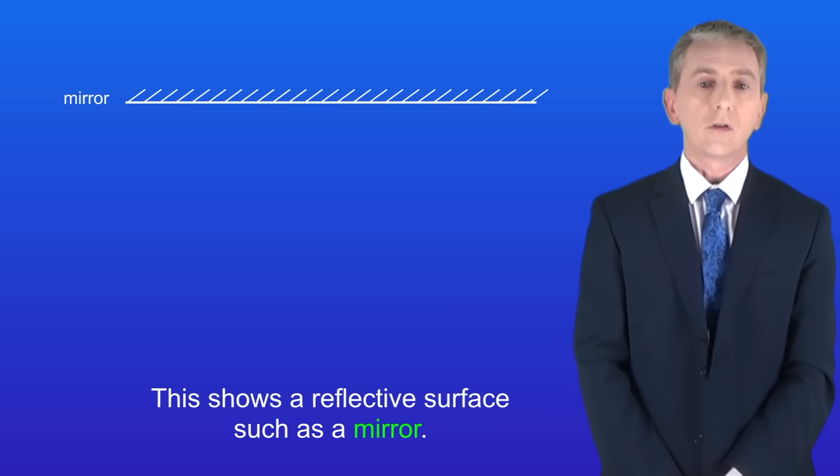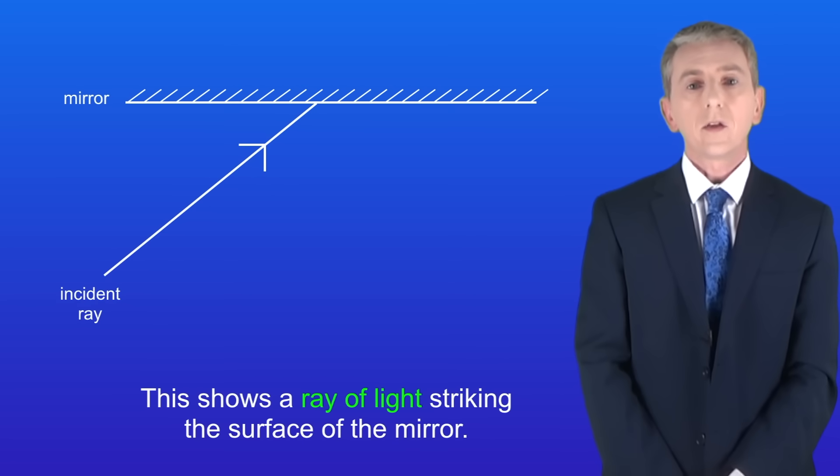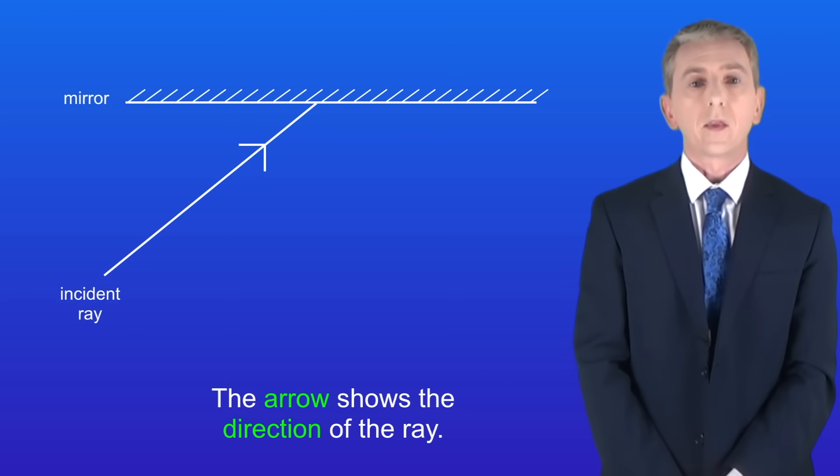I'm showing you here a reflective surface such as a mirror. This shows a ray of light striking the surface of the mirror. The arrow shows the direction of the ray and you must always remember these in your exam.